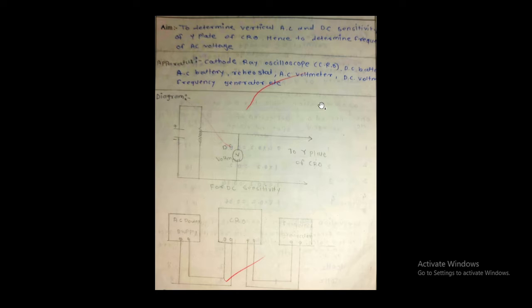Hello students. Today we start one new practical: cathode ray oscilloscope. It is an electronic instrument used for a number of purposes like AC voltage measurement, DC voltage measurement, frequency measurement, and phase measurement. Also, to calculate AC and DC sensitivity, this CRO is used. We will determine the vertical AC and DC sensitivity of the Y plate of CRO, and hence determine the frequency of AC voltage — that is, DC sensitivity, AC sensitivity, and frequency of AC voltage.